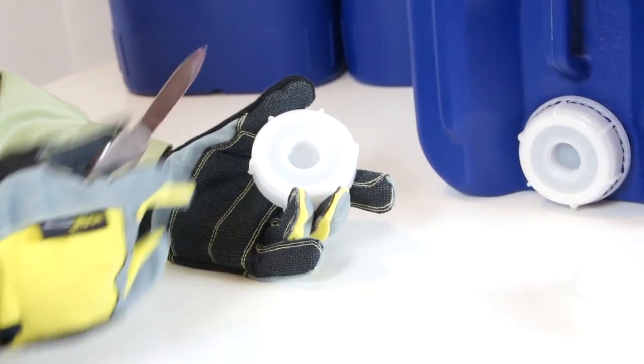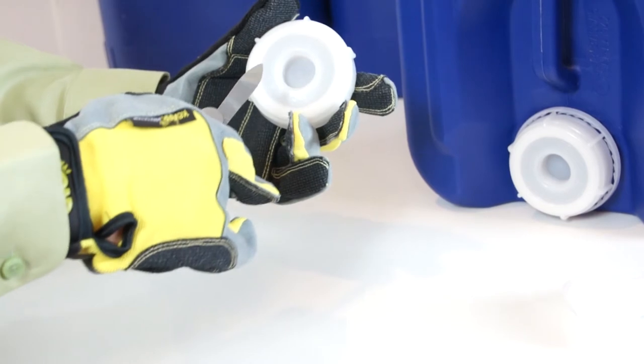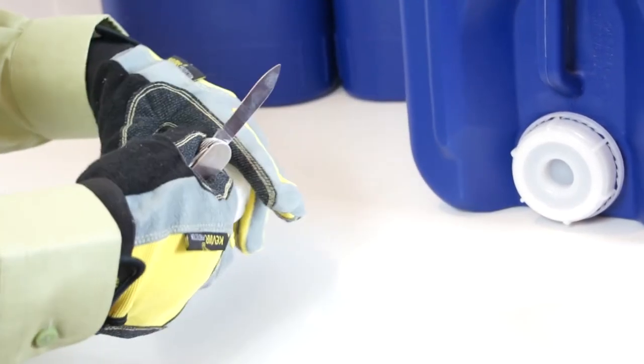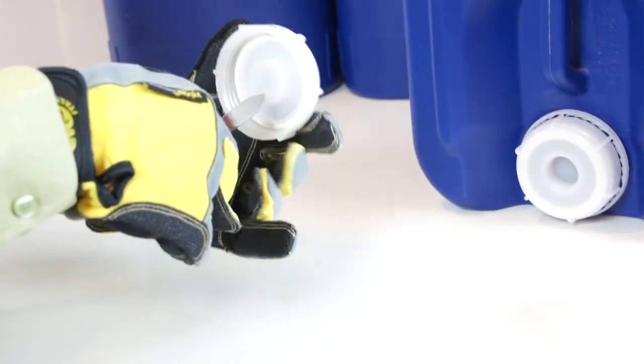First, you'll take the knife or drill and cut out the center hole of the cap. You'll want to do this from the back side of the cap to avoid causing damage to the threads.